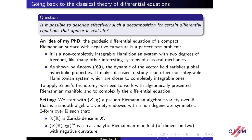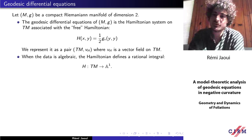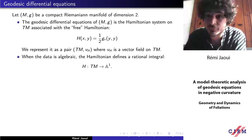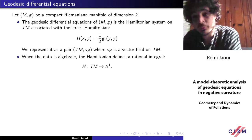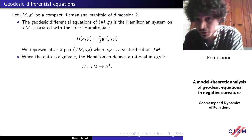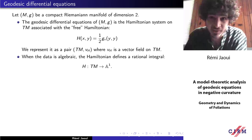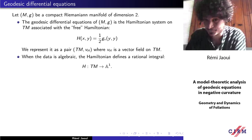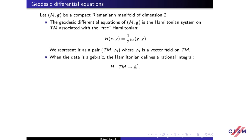Let me describe a bit what we do with these equations. The real points give a compact Riemannian manifold of dimension 2. To define the geodesic differential equation, you can use the Levi-Civita connection, but to keep an algebraic framework, the simplest approach is to look at it as a Hamiltonian system. The free Hamiltonian is given by the kinetic energy, and when everything is given algebraically, the Hamiltonian itself defines a rational integral, which tells you how to start your decomposition.